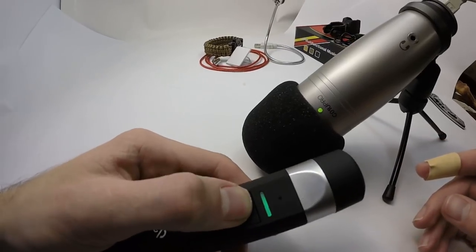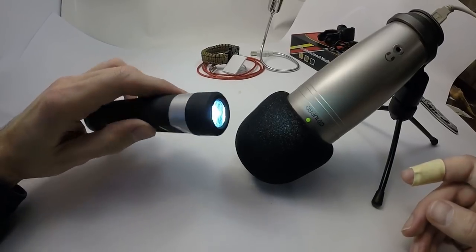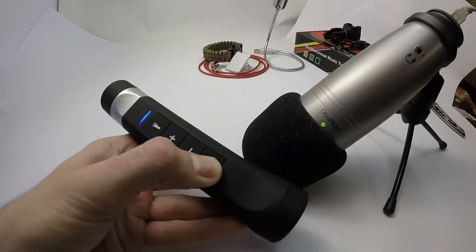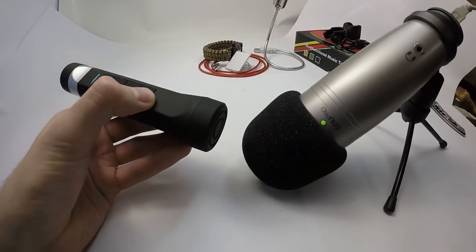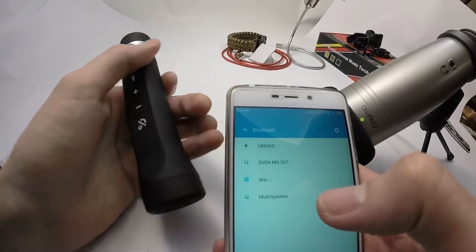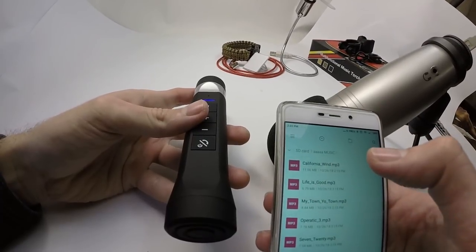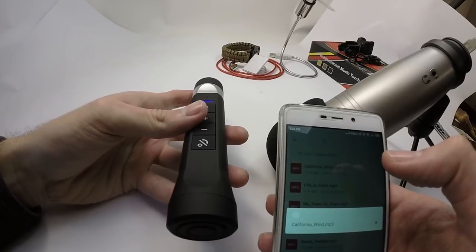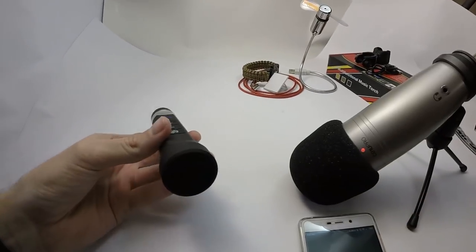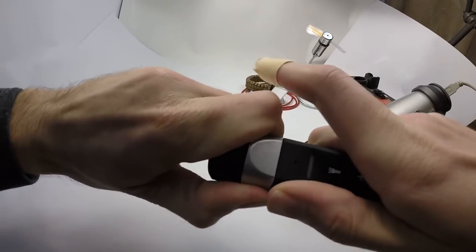You can turn on the torch just by pressing this button. It is a very bright light. Then you can activate the Bluetooth speaker by holding the power button until you hear this female voice. Then you can connect your phone via Bluetooth and turn on some music. The speaker is pretty loud.